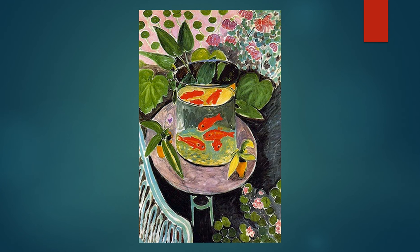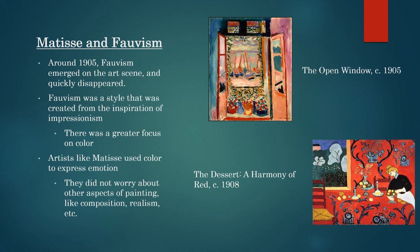Before we dive into this analysis, I'm going to discuss some history behind Fauvism. Henry Matisse is considered to be the father of Fauvism. The style was inspired by the works of post-impressionists and their use of color. Fauves took this technique to the extreme and used color to express the ultimate emotion of a piece. Matisse was very well known for his use of color and focused on that for most of his work. Fauvism did not concern composition or how realistic an image appeared.